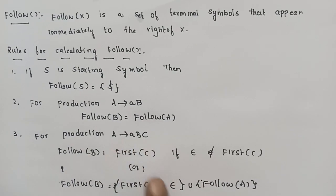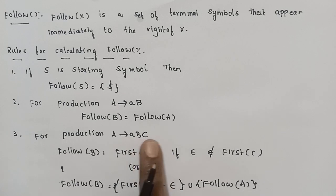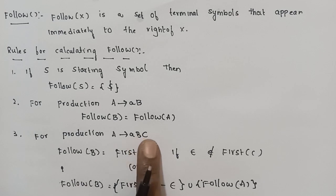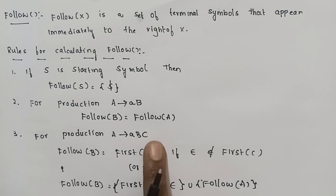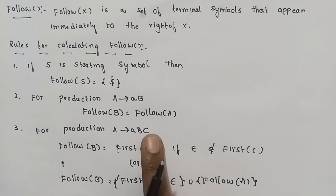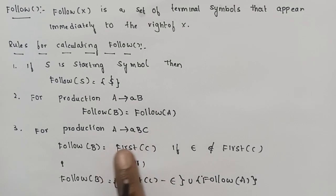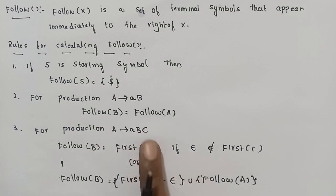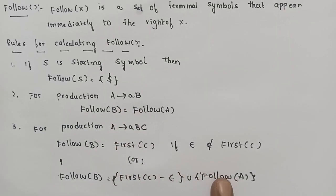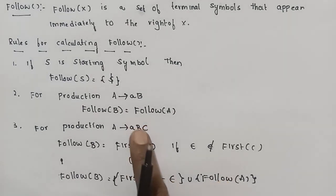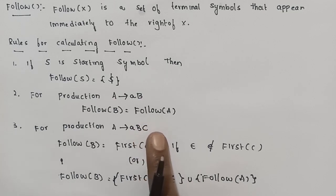Next rule: For a production A → ABC, where B is a non-terminal and C follows B, if epsilon is in FIRST of C, then FOLLOW of B equals FIRST of C minus epsilon, union FOLLOW of A. If epsilon is not in FIRST of C, then FOLLOW of B equals FIRST of C.